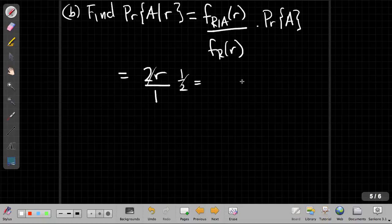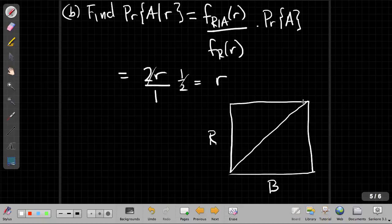And so that sort of makes sense if I quickly sketch another version of that square. I have r on this side beyond the other. Again, interested in, my event A is up here in this section. This is the event that r is greater than or equal to B.